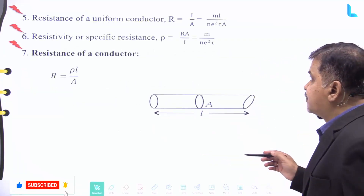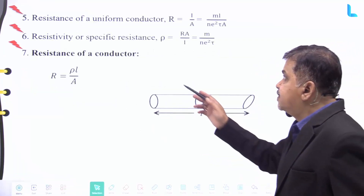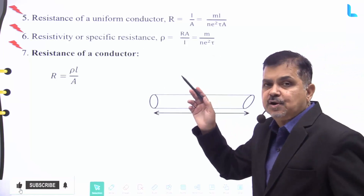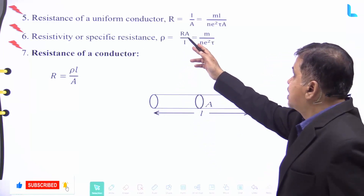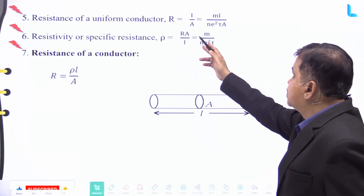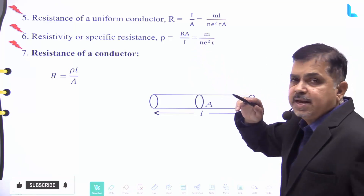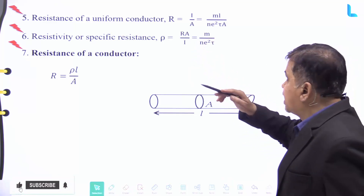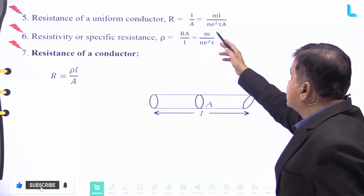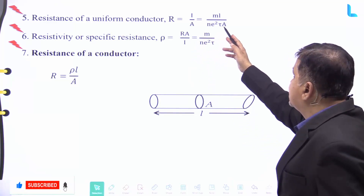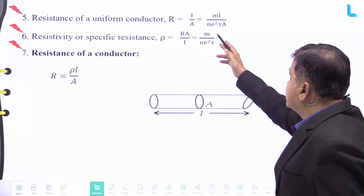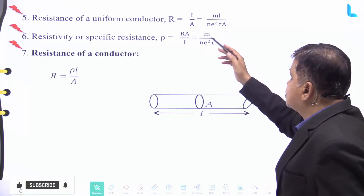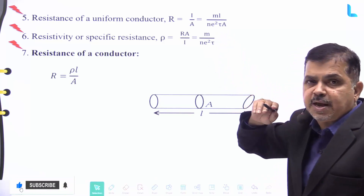Number five: the resistance of a uniform conductor is given by R equal to ρl by A, and it is further equal to m × l divided by n × e² × τ × A.